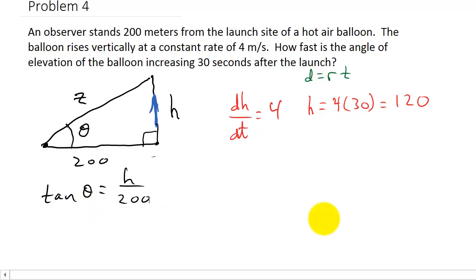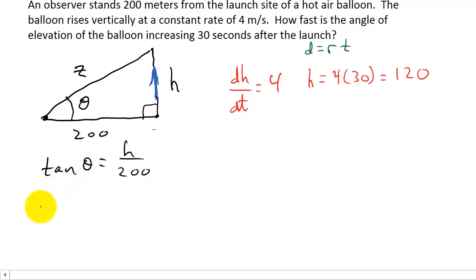And then if I differentiate this with respect to t, the derivative of tangent is secant squared theta times dθ/dt is equal to, now the derivative of this is just taking the derivative of h. Just remember, this h over 200, that's the same thing as 1 over 200 times h. So that's like taking the derivative of 2h or 3h. So the derivative of this would be 1 over 200 times dh/dt.